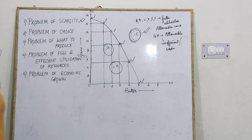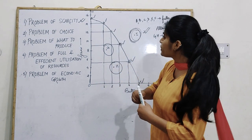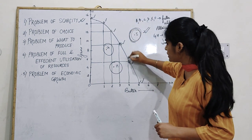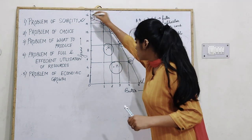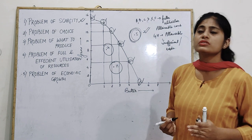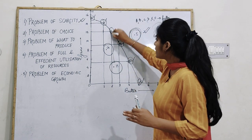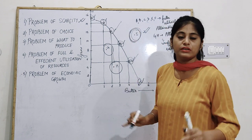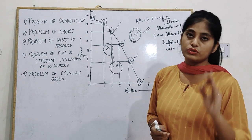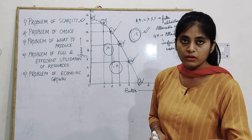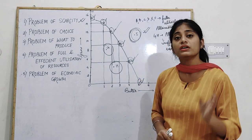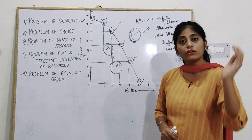Next is the problem of choice. We have several combinations on the PPC curve — A, B, C, D, E, F — and you have to choose which one you are going for. Suppose you have to choose between C and E; either you go for C or you go for E. That is the problem of choice: which combination of goods and services you are going for, where resources are fully utilized.